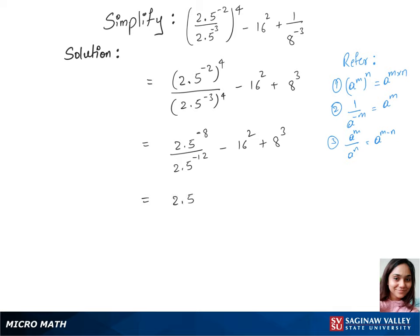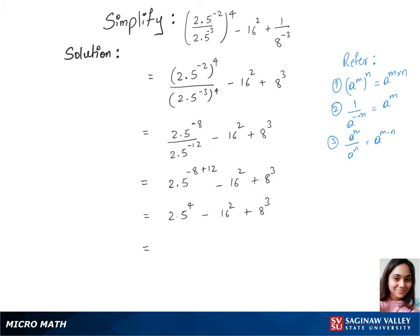We'll write our base 2.5 to the power minus 8 plus 12, minus 16 square plus 8 cube. In our next step we have 2.5 to the power minus 8 plus 12 will be 4, minus 16 square plus 8 cube. We have 2.5 to the power 4 minus 16 square plus 8 cube.